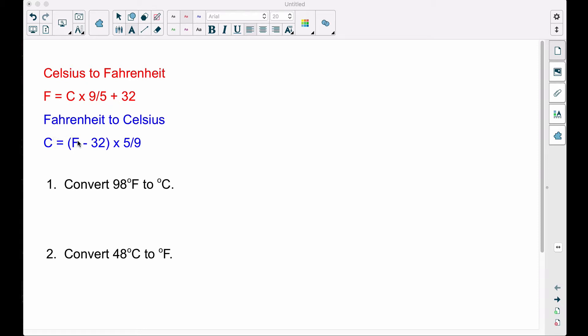If we have Fahrenheit and want to get degrees Celsius, we take the Fahrenheit, subtract 32 from it, and then multiply it by 5/9. I don't recommend using a decimal here because 5/9 is a repeating decimal, but we will see that when we do these two examples.